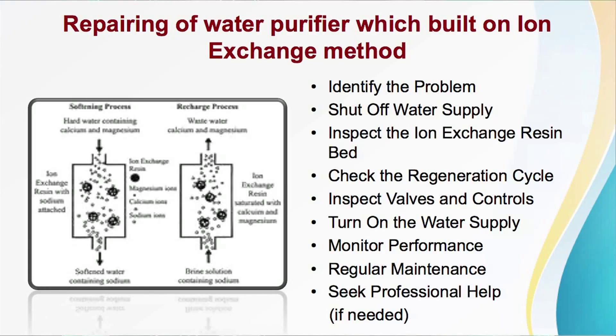Then the next step is check the regeneration cycle. If the regeneration process is not working correctly, follow these steps: check the timer or control valve settings for the regeneration cycle, and ensure that they are set according to the manufacturer's recommendations. Inspect the brine tank for salt levels; if the salt is depleted, add the appropriate amount of water softener salt. Then manually initiate a regeneration cycle according to the manufacturer's instructions to ensure the system is functioning correctly. Monitor the cycle to see if any issues arise.